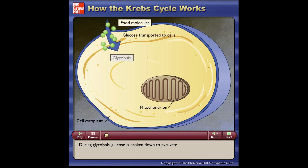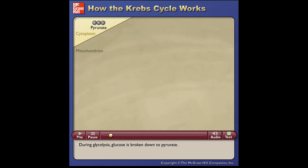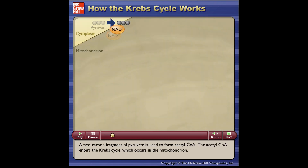During glycolysis, glucose is broken down to pyruvate. A two-carbon fragment of pyruvate is used to form acetyl CoA. The acetyl CoA enters the Krebs cycle, which occurs in the mitochondrion.